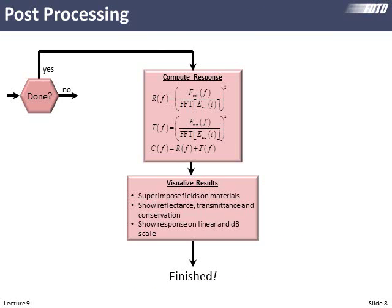When we're done, we're ready to post-process. We've probably taken a bunch of Fourier transforms, and so we take these Fourier transforms and divide by the Fourier transform of the source. Then if we're calculating reflectance and transmittance, we'll add those together and make sure we get 100%. And then we visualize our results. Maybe we show the field on top of the materials. Maybe we're plotting the transmittance and reflection. Maybe we're doing other kinds of post-processing. We could do almost anything here.